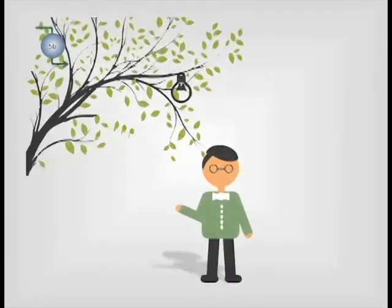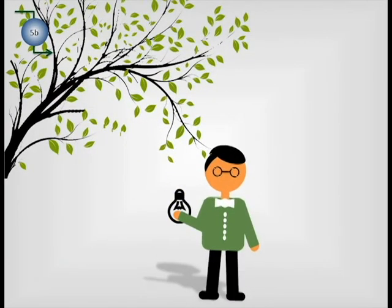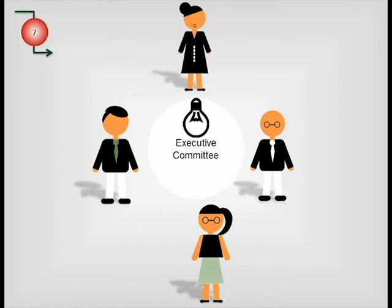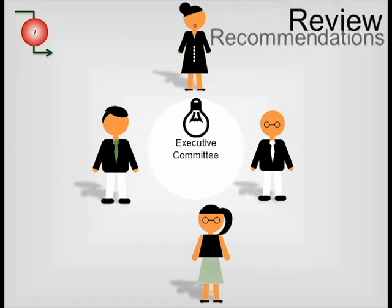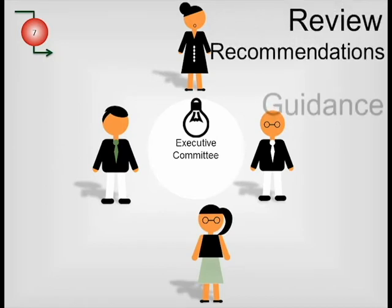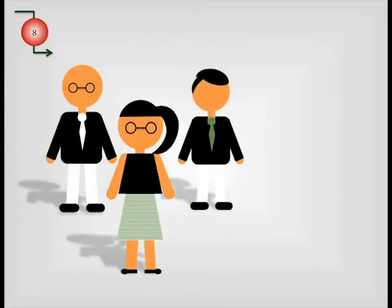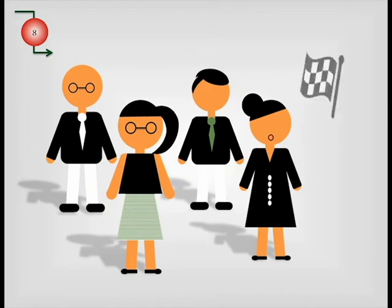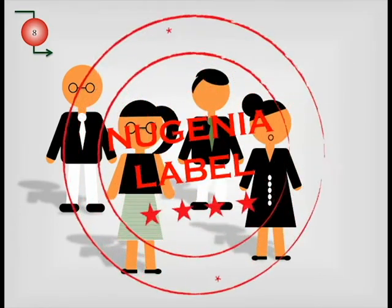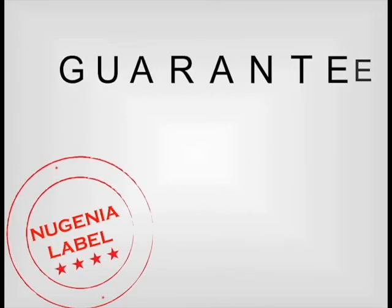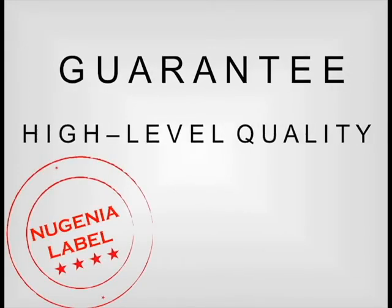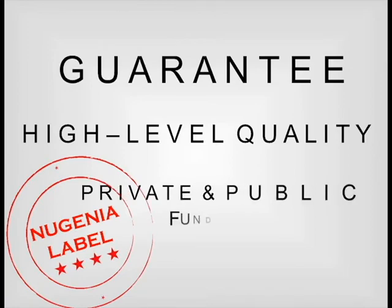Or, if it's mature enough, it can be submitted directly to the Neugenia Executive Committee for review and recommendations, including guidance on possible funding sources. If the Executive Committee considers the proposal to be solid and ready for development, they give it a Neugenia label — the guarantee of a high-level quality research project and a clear sign for potential private and public funders.